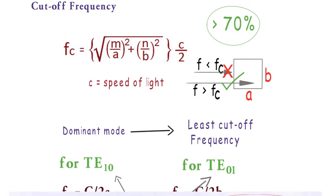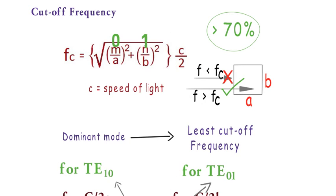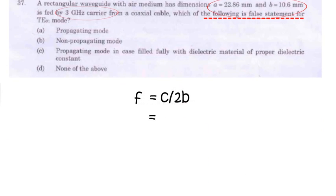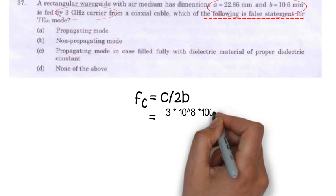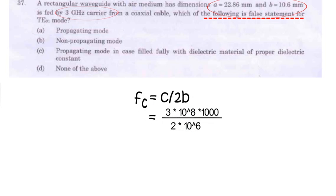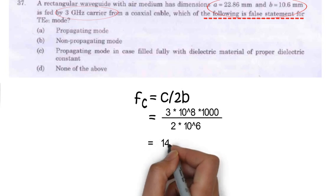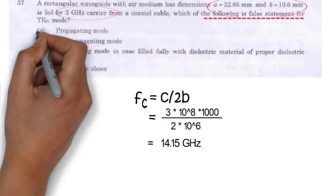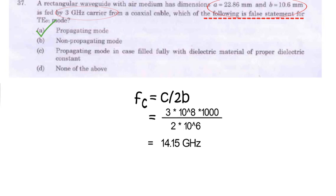When we put m equal to 0 and n equal to 1 in this formula we will get fc equal to c divided by 2b. That will be equal to 14.15 gigahertz. So minimum frequency that can pass in TE01 mode is 14.15 gigahertz. So TE01 is a non propagating mode for 3 gigahertz frequency. So option a is correct because it is a false statement.